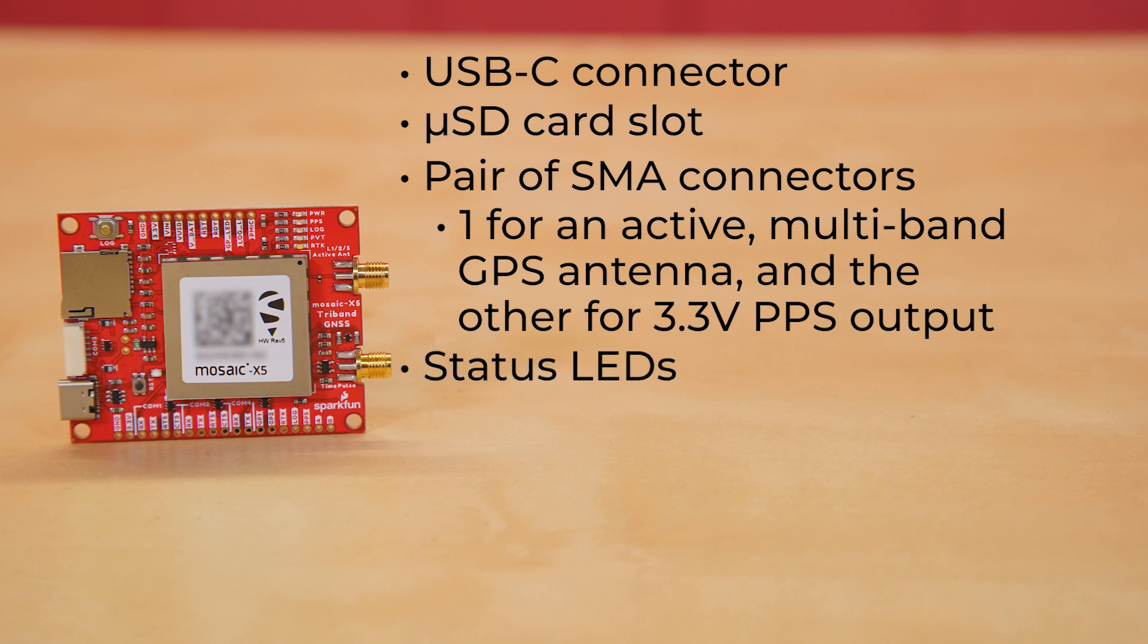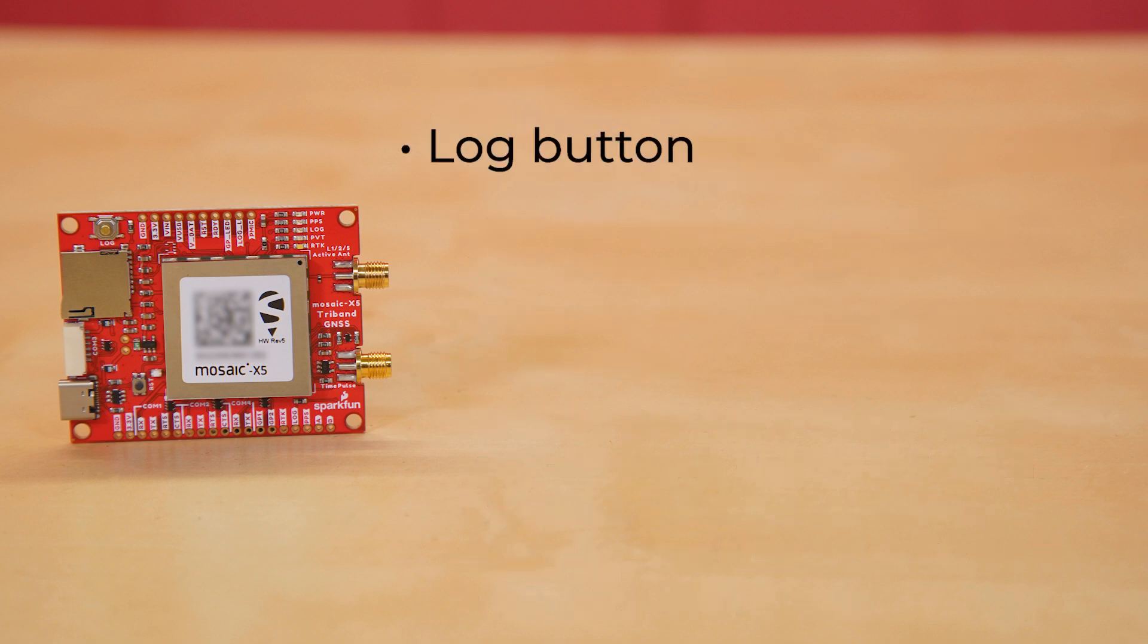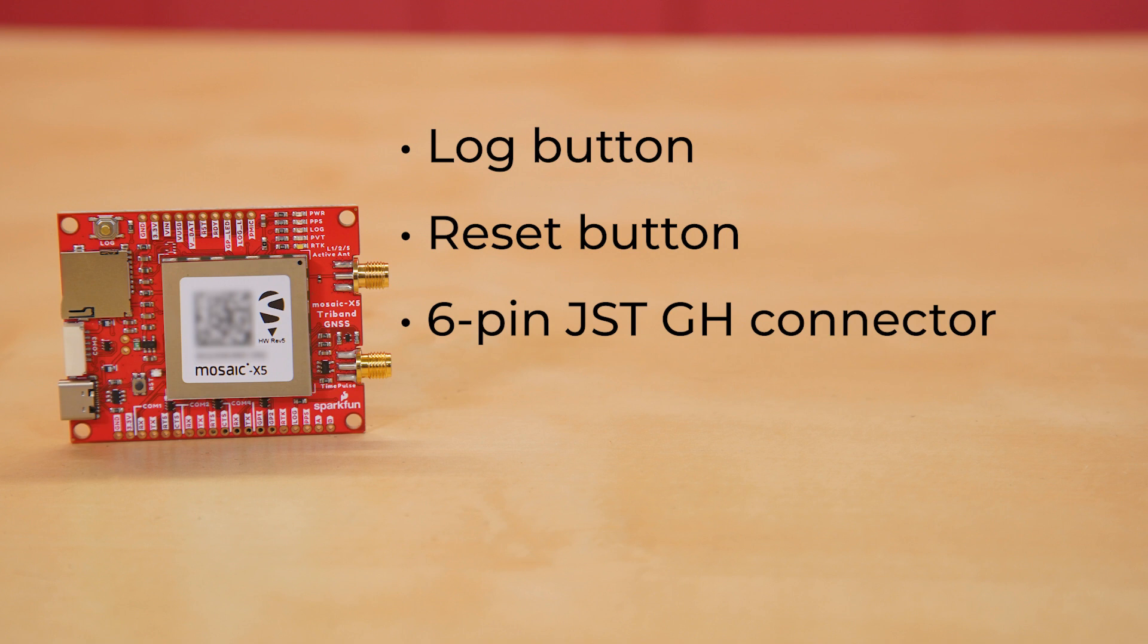There are also a handful of status LEDs. A red for power, yellow for pulse per second, green for data logging, blue for position, velocity and time solution, and white for RTK mode. There's a log button and a reset button, and a 6-pin JST GH connector and ESD protective diodes. And just a heads up, the I/O logic level is 3.3V.